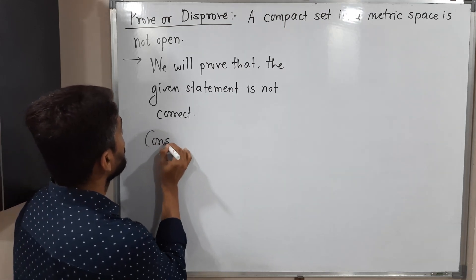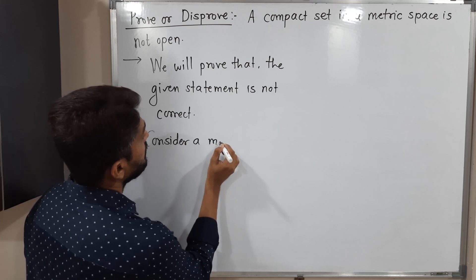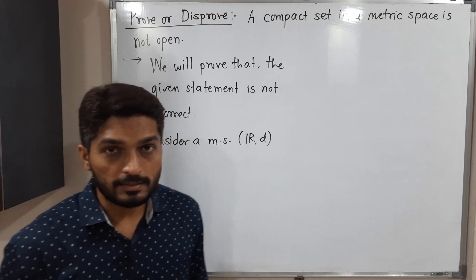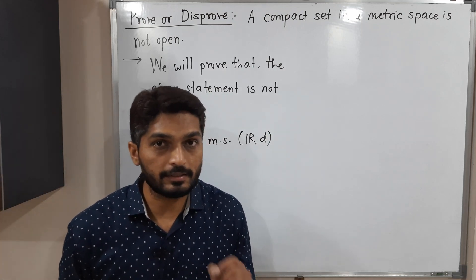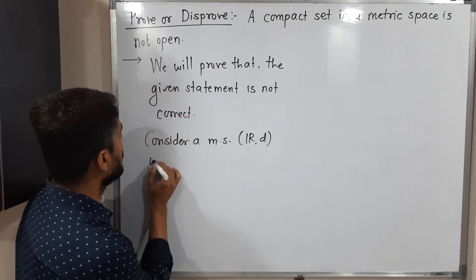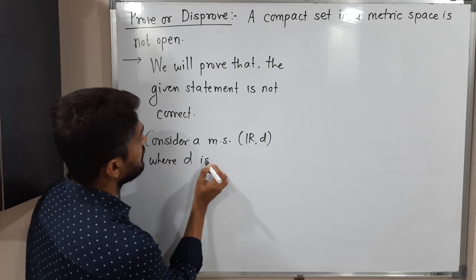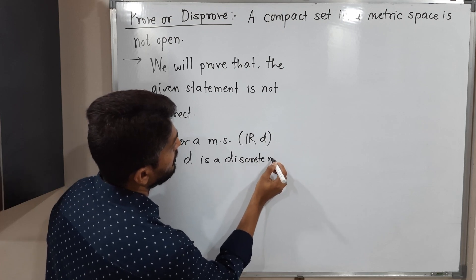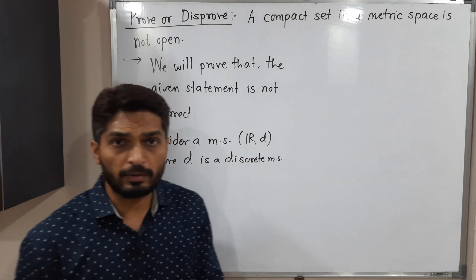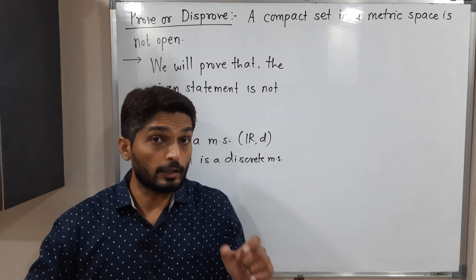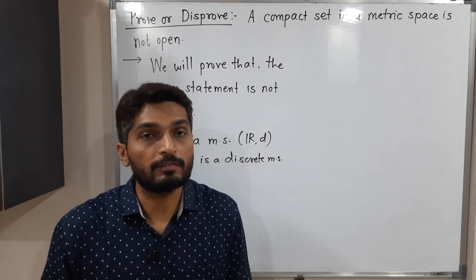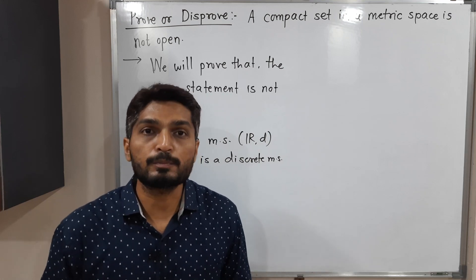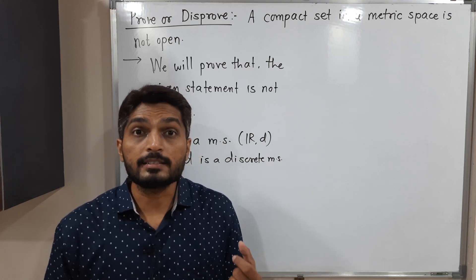Consider a metric space (R, D). Here D is not the usual distance; D is a discrete metric. You are familiar with a discrete metric space: D(X,Y) equals zero if X equals Y, and it equals one if X is not equal to Y. So we have such a metric space. Now let us consider one set.